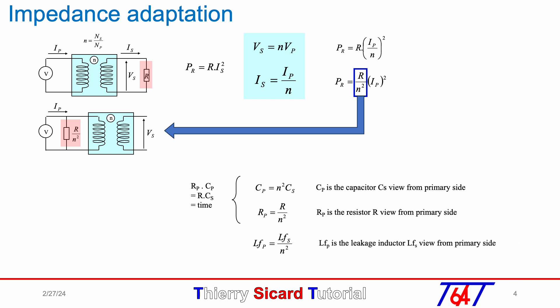For the inductor, L_FP viewed from primary side is equal to L_FS divided by n squared. Of course, R and L are both divided by n squared, which means L over R value does not change because L over R is equivalent to a time constant.